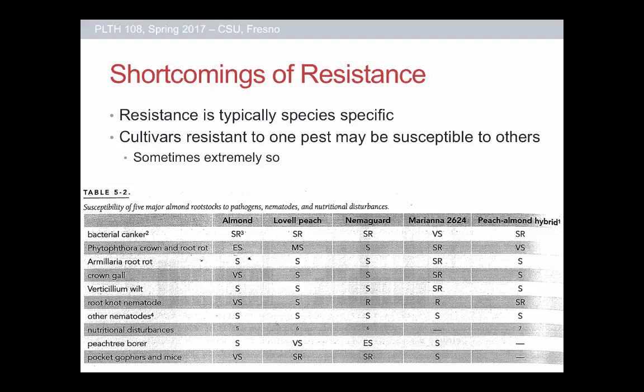Finally, one of the last big shortcomings of resistance is that it's often really species-specific. A cultivar resistant to one particular pest species may be highly susceptible to another. For example, an almond tree resistant to brown rot might not be resistant to Phytophthora — it may actually be super susceptible. You kind of have to pick your poison. It may even be resistant to certain strains of a pest but not to other strains. You see complex tables in publications listing for every variety whether it's susceptible, resistant, or partially resistant to different strains.